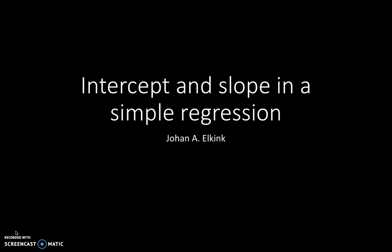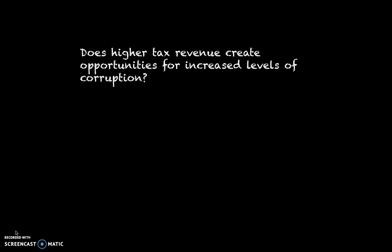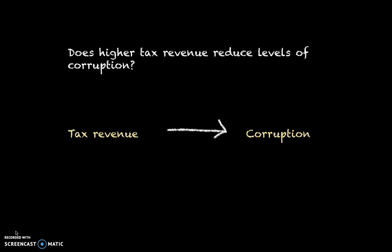I took real data, but a slightly silly example. The example here is: does higher tax revenue create opportunities for increased levels of corruption? I did this because data was easily available. So we have annual data for one particular year, 2000, where we have measures of tax revenue and corruption, and the argument is that higher tax revenue might lead to lower levels of corruption.